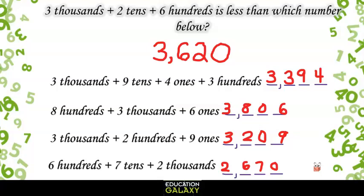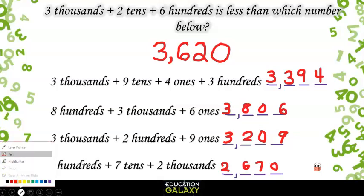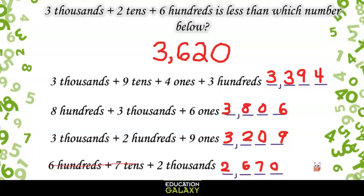Now we can compare these numbers. We are looking for a number that our number, 3,620, is less than. That means we need to find a number greater than ours. If we look at the thousands place, we know 2,000 is not greater than 3,000, so we can eliminate that answer choice. Now let's look at the hundreds. Our number has 6 hundreds, but this number has 8 hundreds. So this must be our answer.